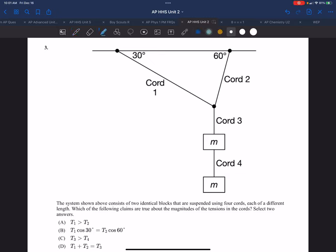In this question we are asked to determine what statements are true about the magnitudes of the tensions in the cords, and we have two answers we're looking for. So we can break these apart: cord one and cord two.